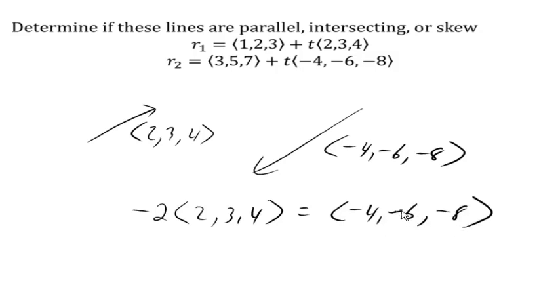Which tells us that these two direction vectors are parallel. And if the direction vectors are parallel, then so are the lines. So these two lines are parallel.